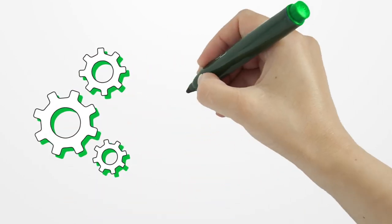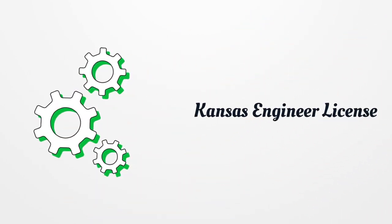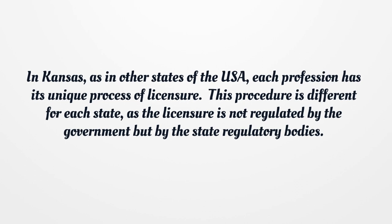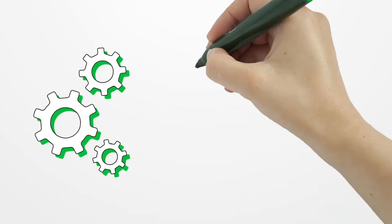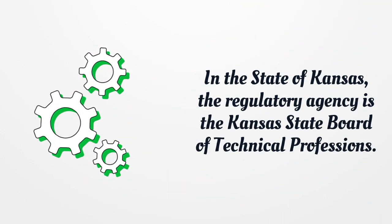Kansas Engineer License. In Kansas, as in other states of the USA, each profession has its unique process of licensure. This procedure is different for each state, as the licensure is not regulated by the government but by the state regulatory bodies. In the state of Kansas, the regulatory agency is the Kansas State Board of Technical Professions.